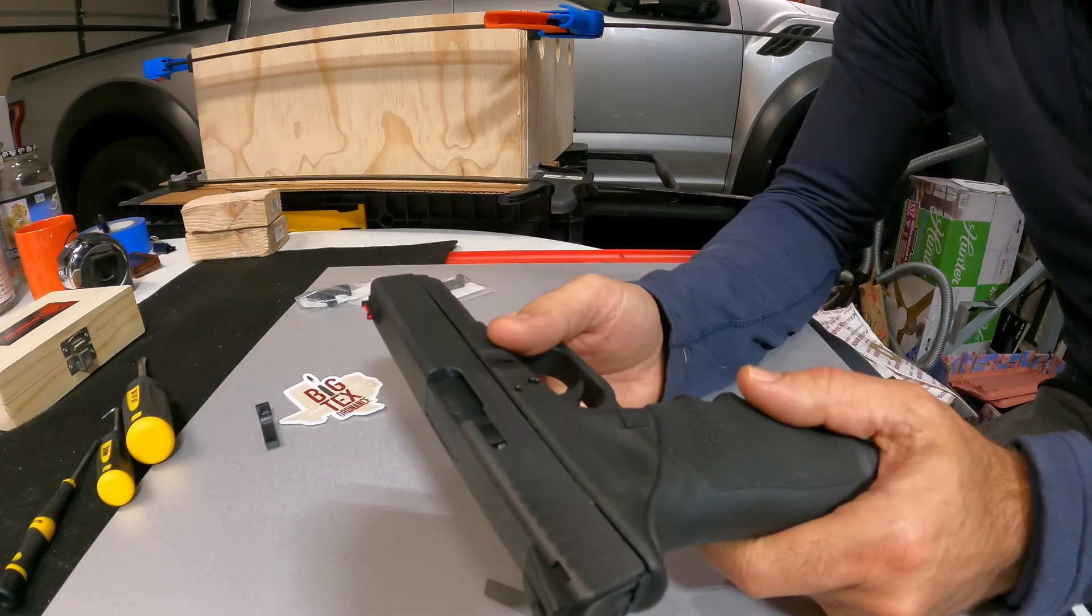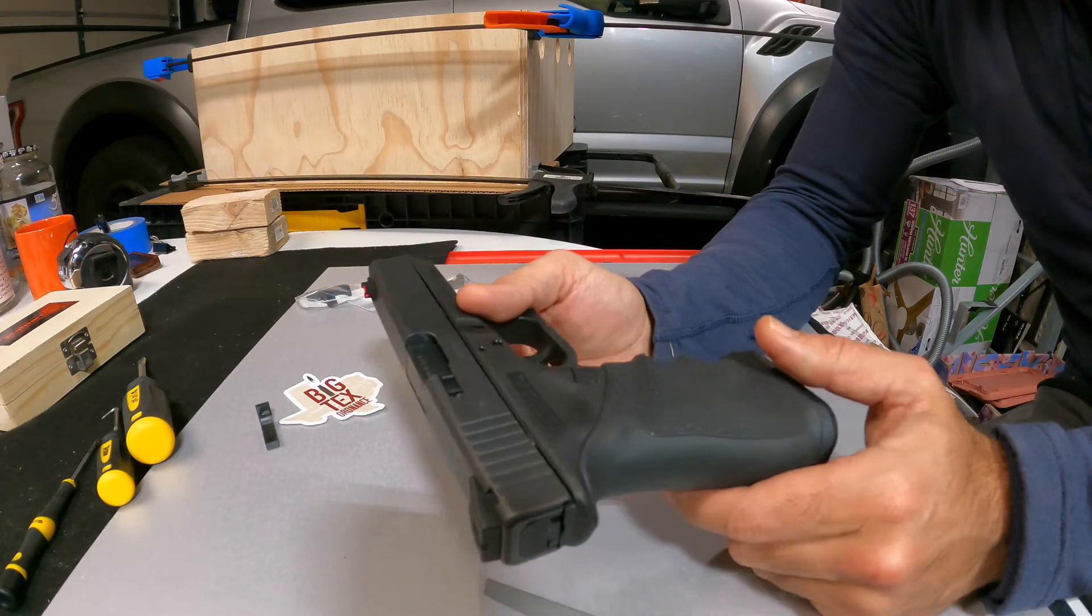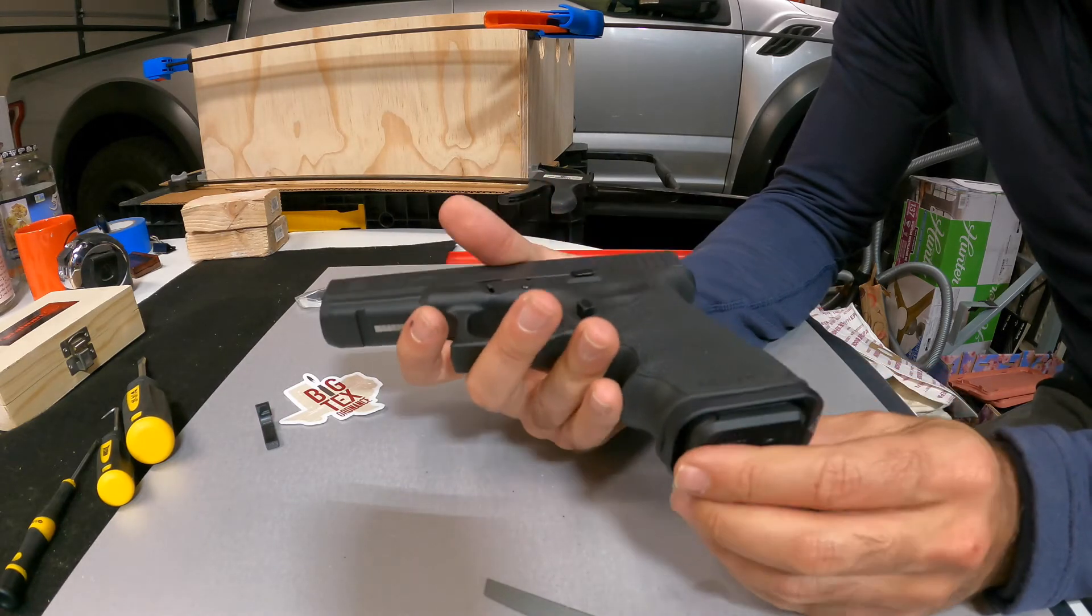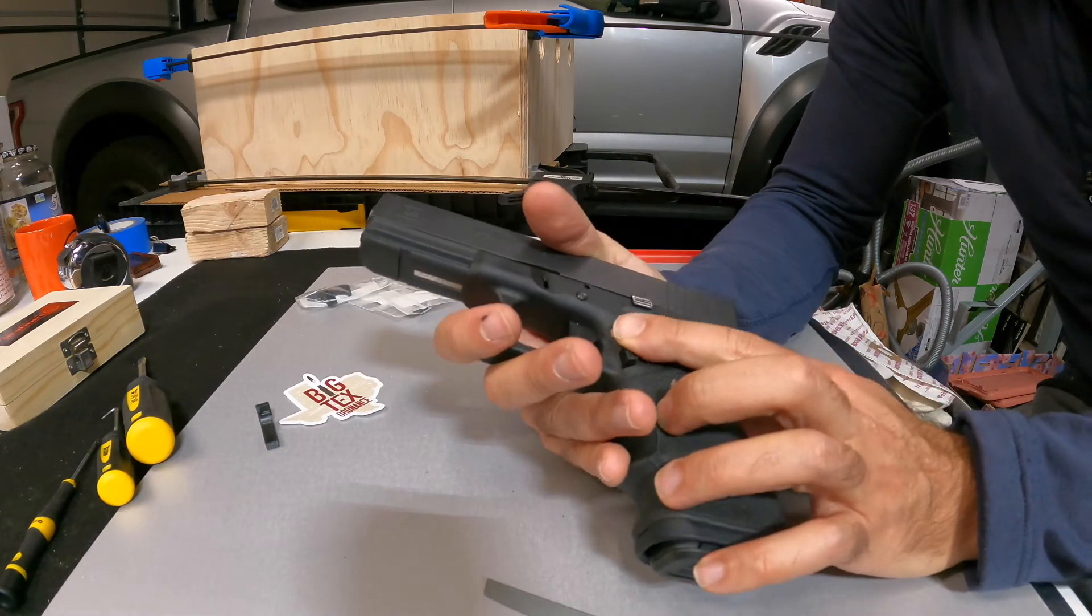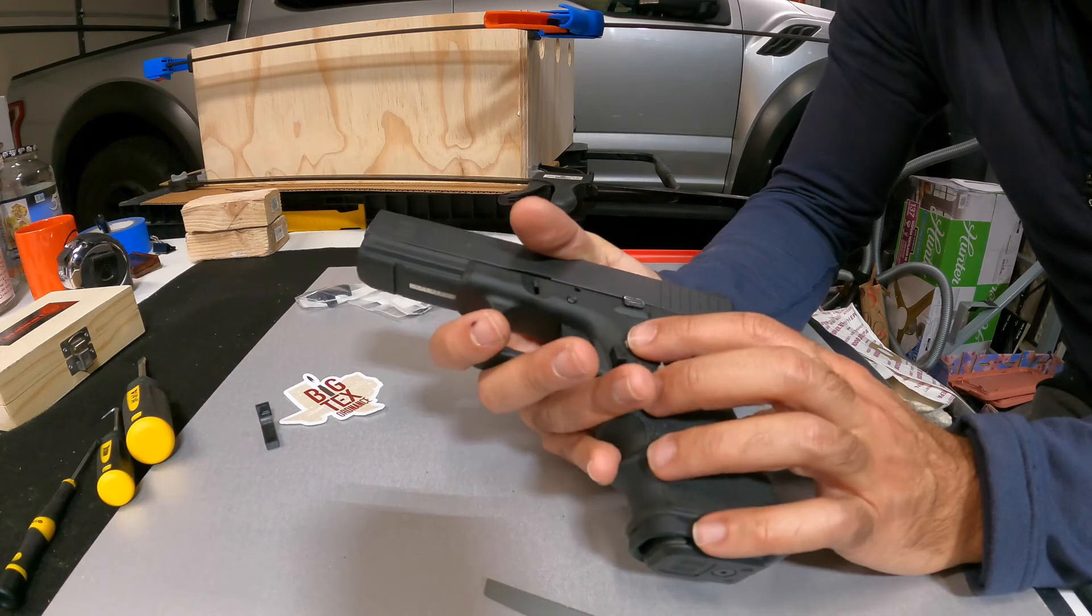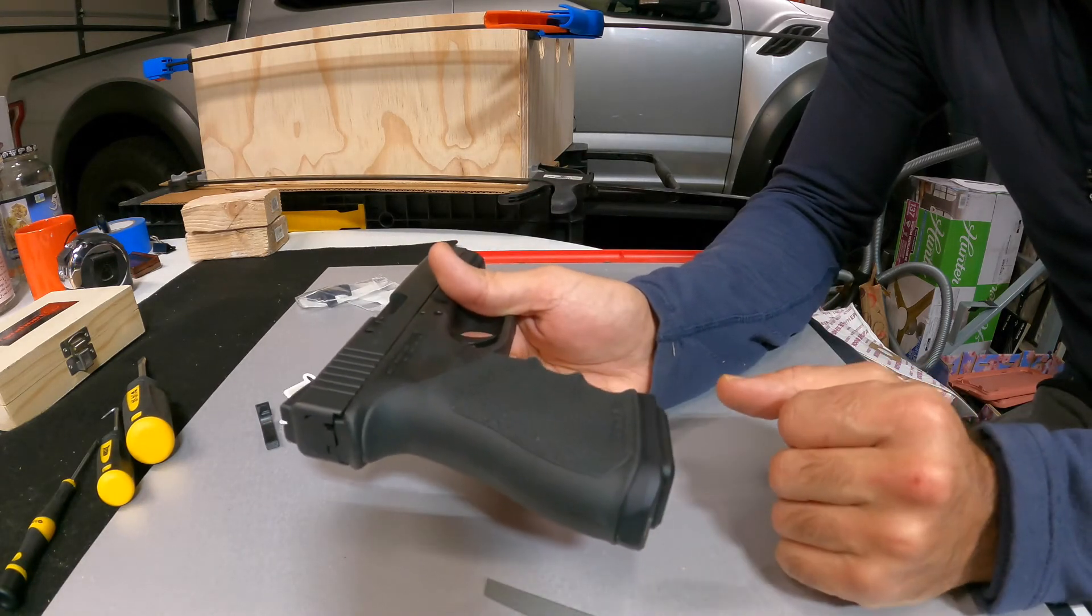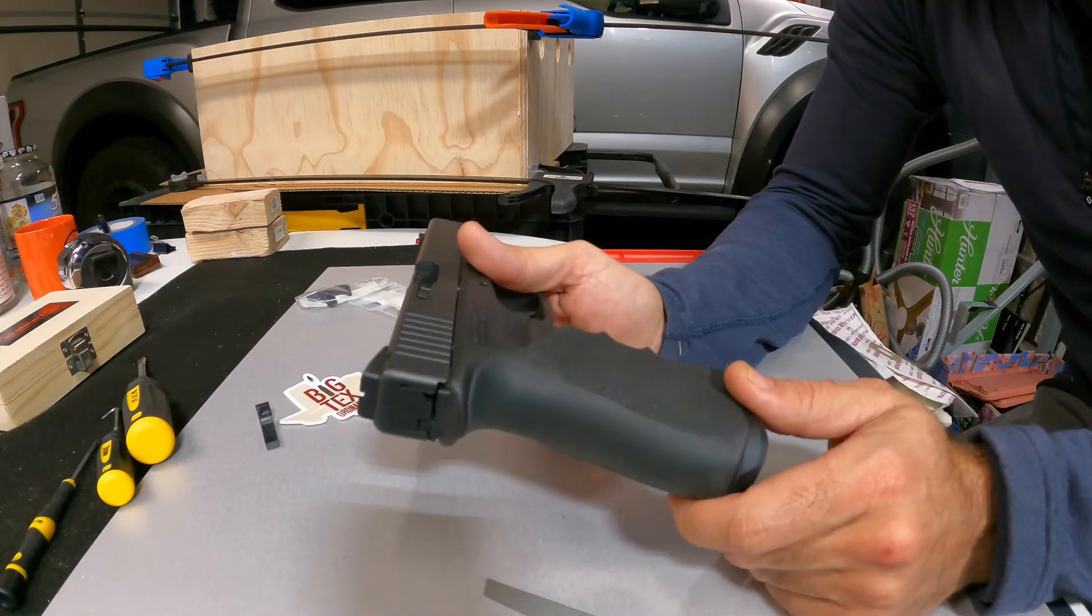Final word on these - make sure you know what generation you're ordering, because the Gen 4s, G43s, G21s, and bigger Glocks all have different styles of extended magazine releases. Pay attention to what you have before you order to make sure you get the right thing.